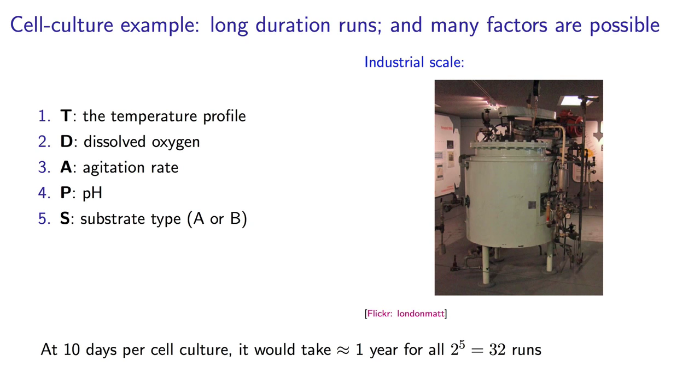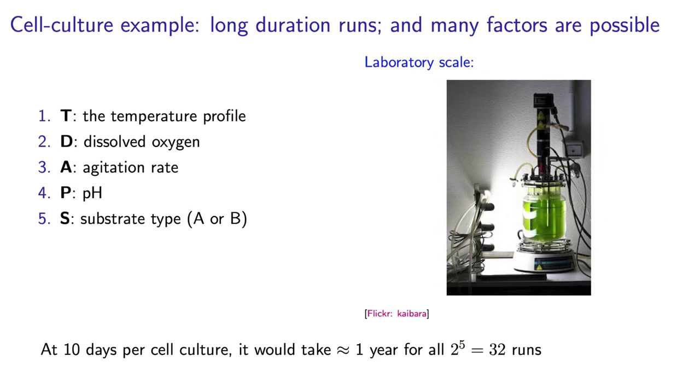A scientist or engineer that is investigating this system with five factors could take well over a year to collect all the data necessary to run 32 experiments in a 2 to the 5 factorial. In most situations, we cannot wait this long for results.